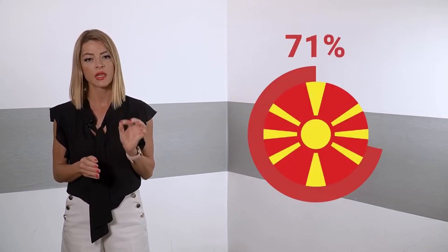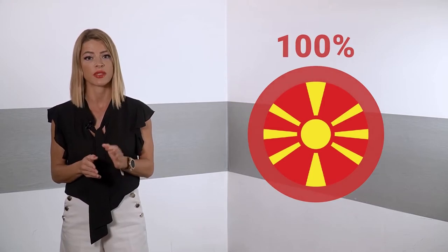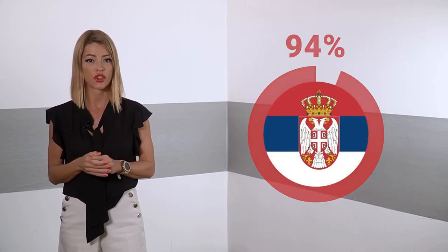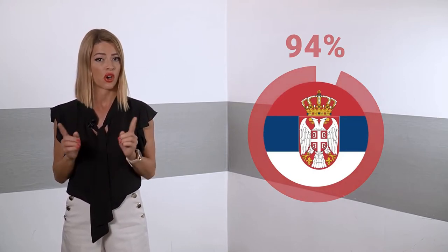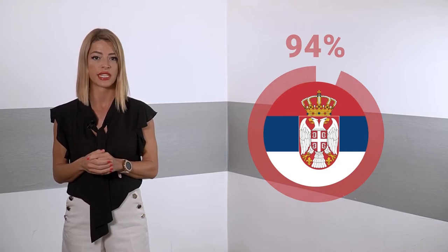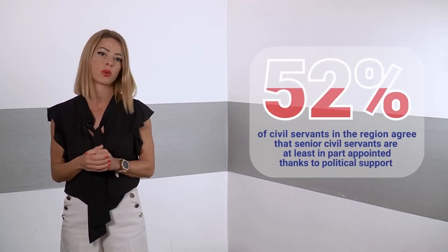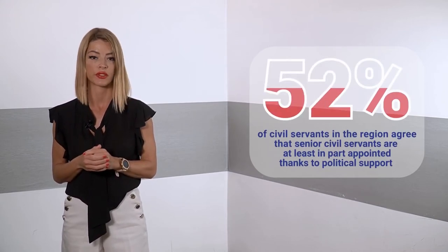In 2019, not a single appointment of senior executives in North Macedonia was based on competition, while 94% in Serbia were appointed with acting statuses without competition, often in open breach of the current legislation. Most of the surveyed civil servants in the region believe that senior civil servants are often or always appointed thanks to political support.